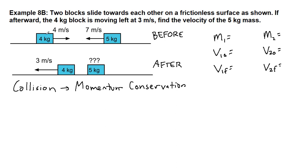So if we decide to read left to right, the 4-kilogram mass would be object number 1, and the 5-kilogram mass would be object number 2. Now, the 4-kilogram mass at the beginning of the problem is moving at 4 meters per second, and at the end of the problem is moving to the left, the opposite direction of where it had been moving, and so we're going to call that negative 3 meters per second. If we forget that minus sign, we have completely changed the problem.